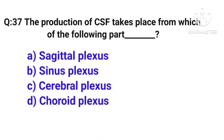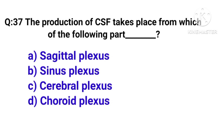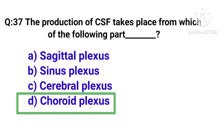Question number 37: the production of CSF takes place from which of the following parts? Correct answer is option D — choroid plexus.